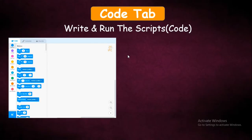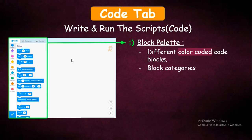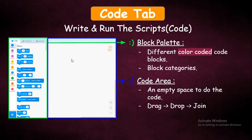This is the Code Tab. To write and run the scripts, we use this Code Tab. It has two important parts. The first one is Block Palette — it will have different color-coded code blocks inside it. We have different block categories here from Motion to My Blocks. The second important area is the Code Area, which is an empty space to do the code. You can easily drag the blocks from the Block Palette, drop them, and join them together to make a meaningful code.